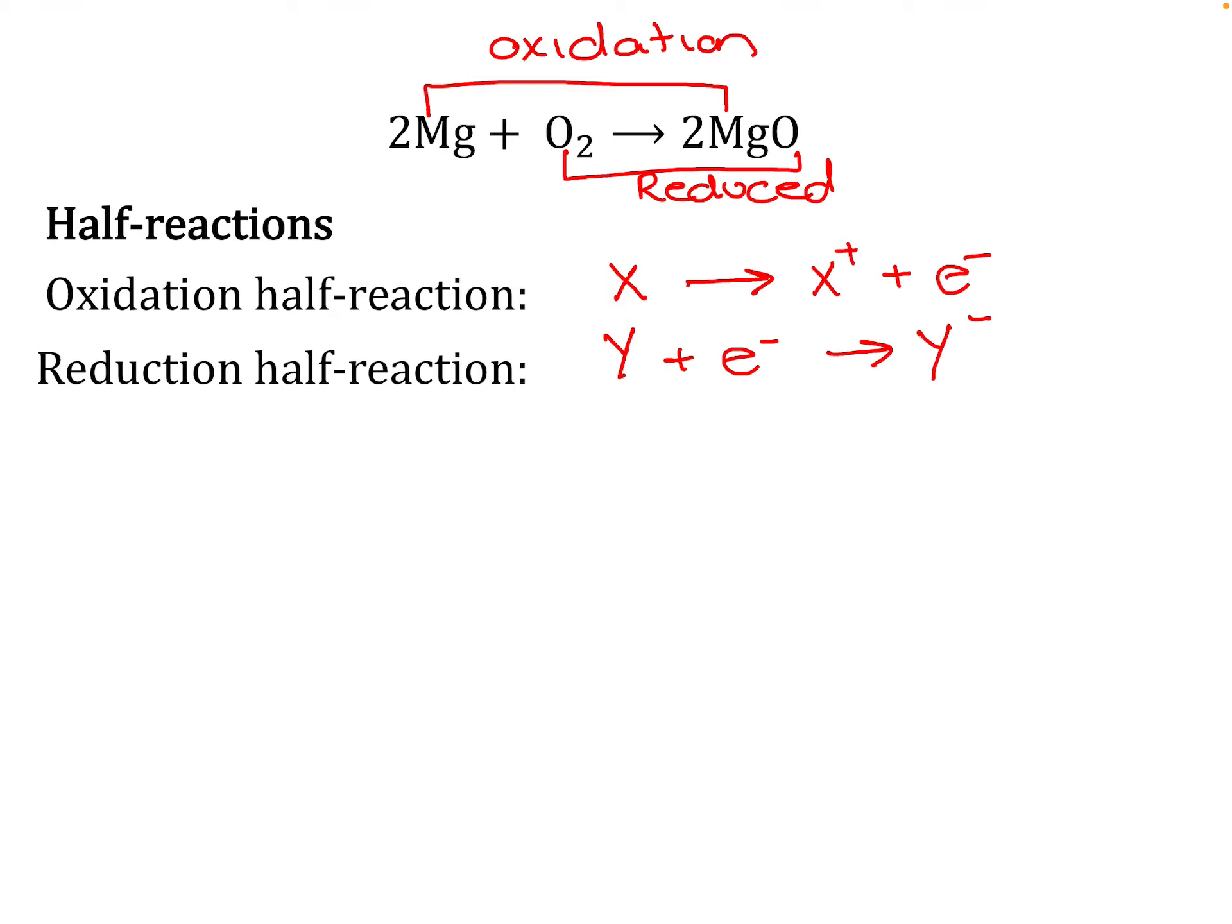This is very important. That electron that was given away is taken by the other thing. You cannot have one without the other. Electrons can't exist on their own. What that does is it gets us an overall reaction, because the electrons disappear, where X plus Y will give me X plus and Y minus. In this case it's one electron, but of course it can be more than that.